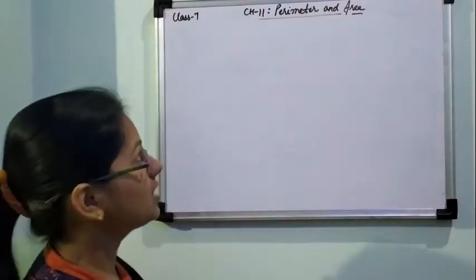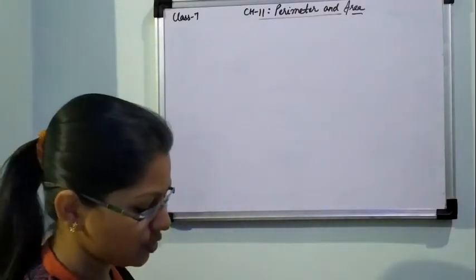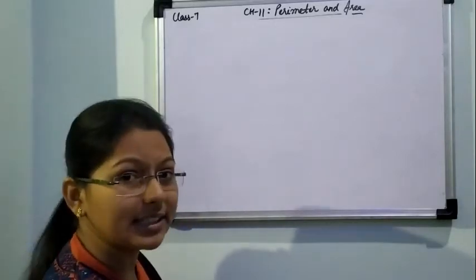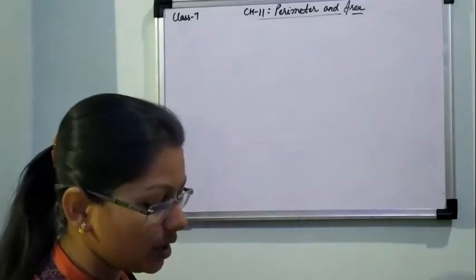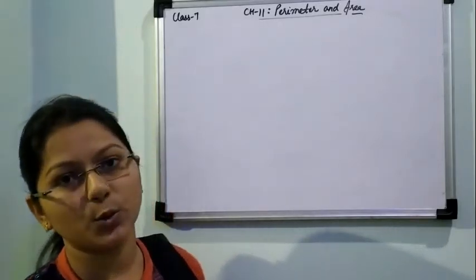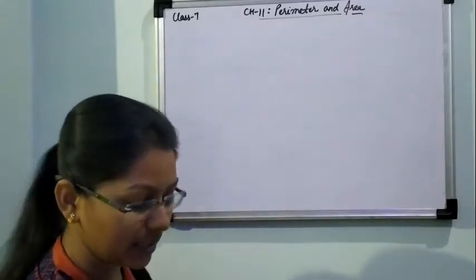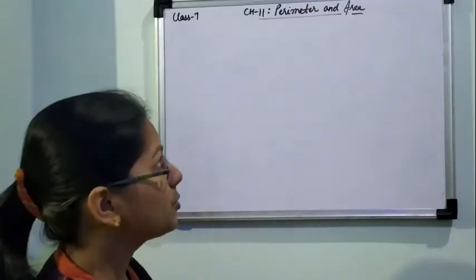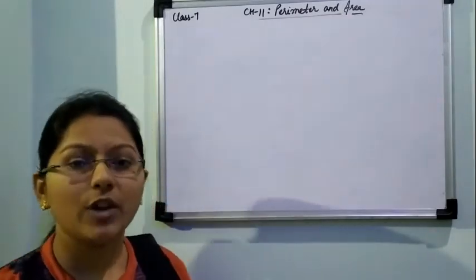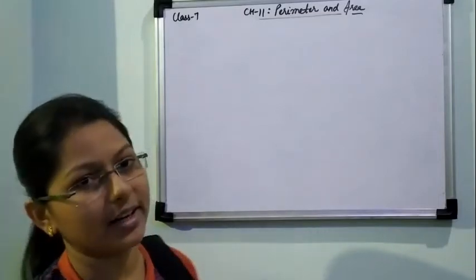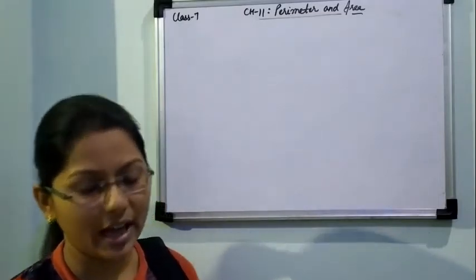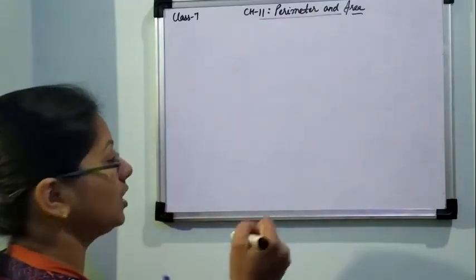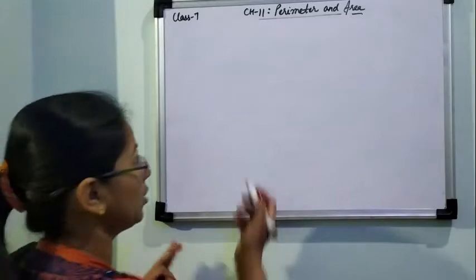Good morning everyone. Today we will start another exercise of this chapter, perimeter and area. In the first exercise we discussed questions related to perimeter of rectangle, perimeter of square, area of rectangle and area of square. So basically in the first exercise we discussed about square and rectangle, their perimeter and area. Now for the next exercise we will be discussing about triangle and parallelogram.